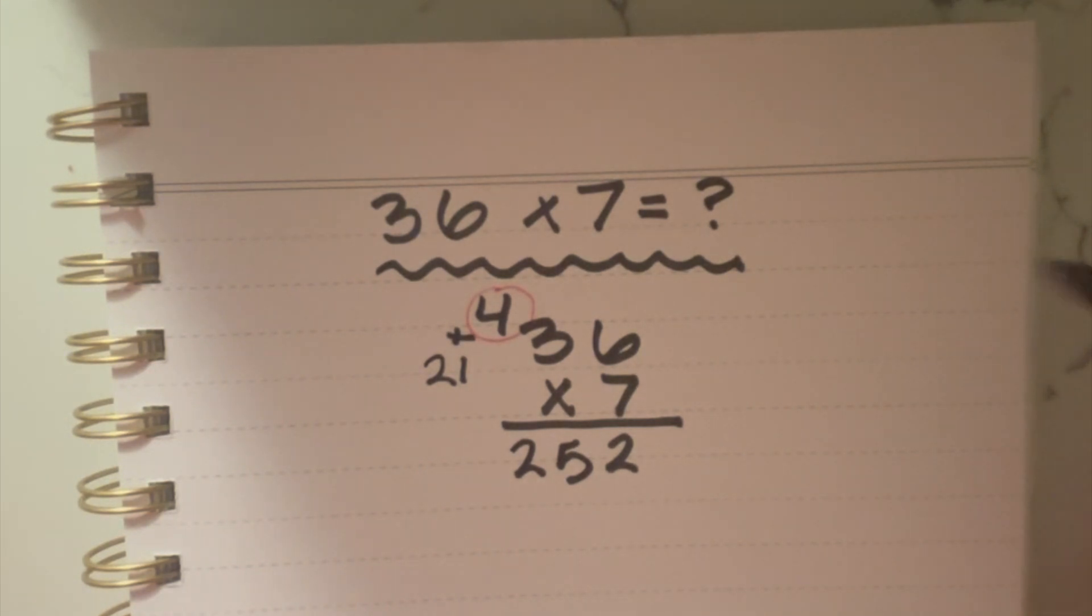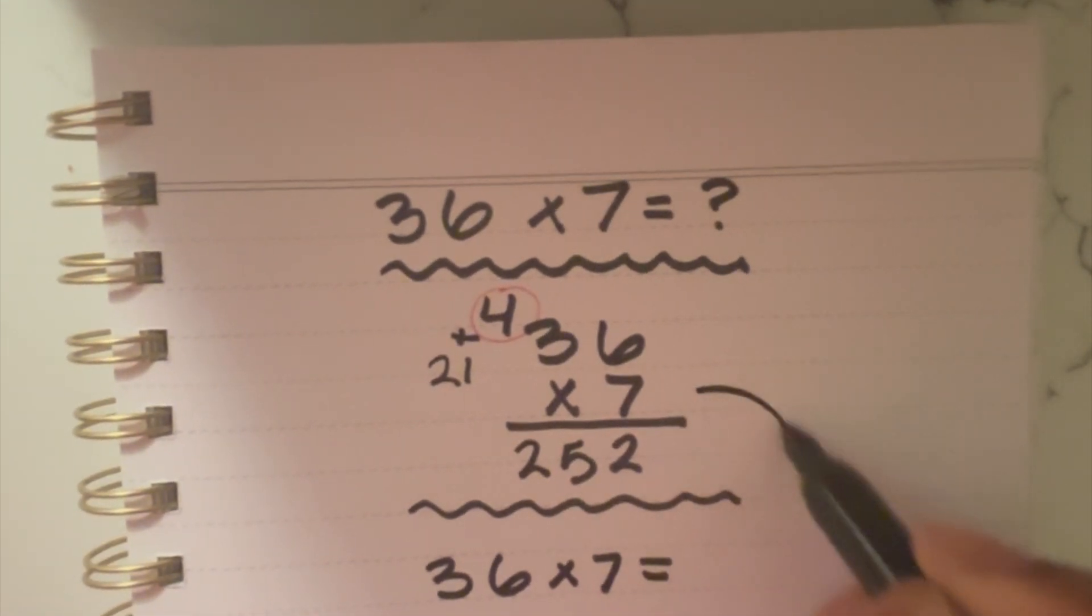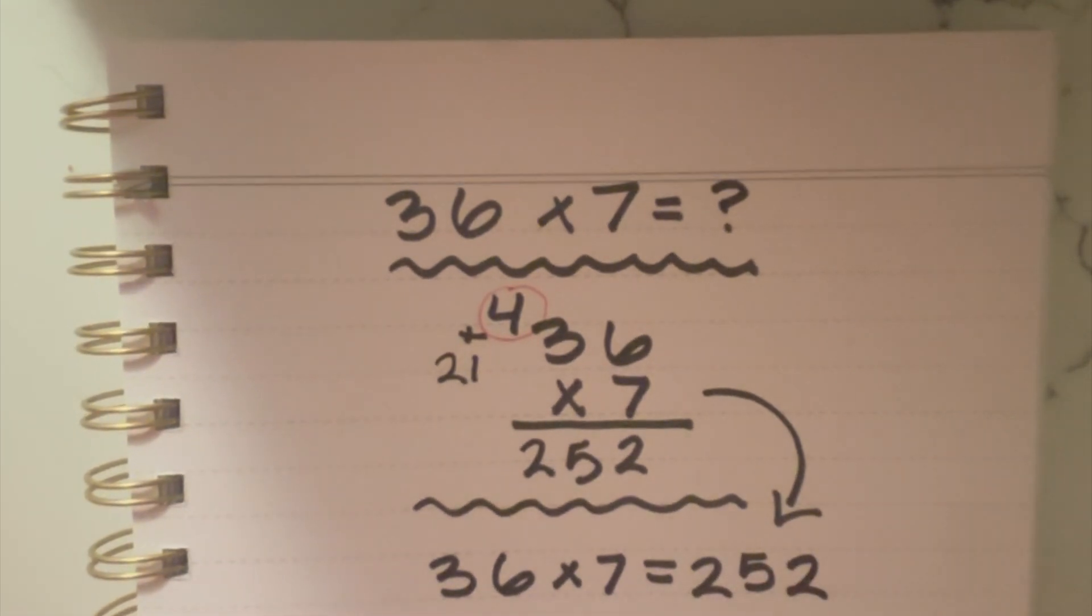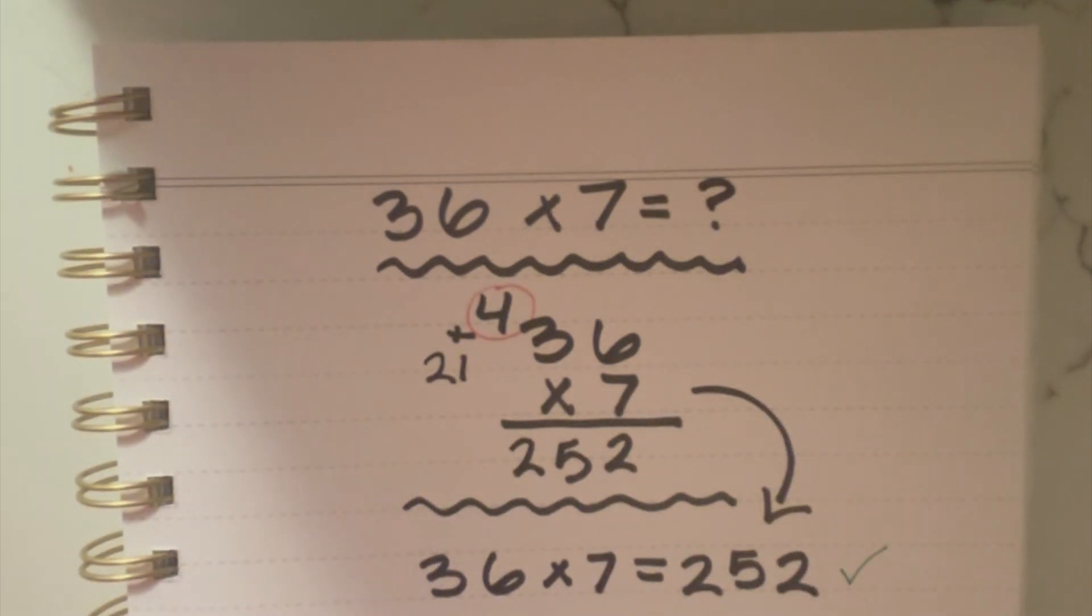So when we're looking back at this format, I'm going to do another squiggly line where we have 36 times 7. After doing it this way, we can see that the product of 36 times 7 is 252. So that's how we multiply a two-digit number by a one-digit number. I hope this helped, and I'll see you in the next video.